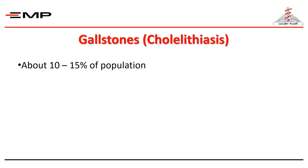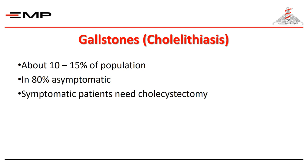Gallstones are the most common biliary pathology and are very prevalent in society. In Egypt, we expect persons with gallbladder stones to be 10 to 15 million. Only 20% of those patients are symptomatic, but among the 80% asymptomatic patients, 1 to 2% will become symptomatic each year. All asymptomatic patients need cholecystectomy with few exceptions.